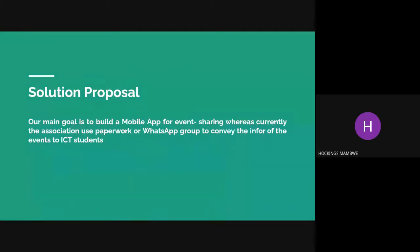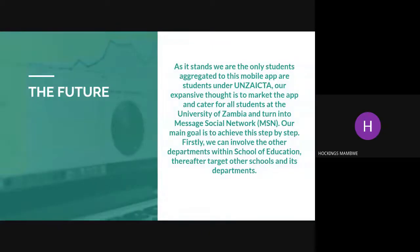If the student subscribes to the mobile application, the student will be notified and will decide when they want to be notified — either 10 minutes before the event or a day before — and students will manage their time efficiently. As it stands now, the only students registered to this mobile app are those under Unza IKTA. Our future plan is to expand this mobile application and market it at a wider base, including the school of education and later the entire University of Zambia.